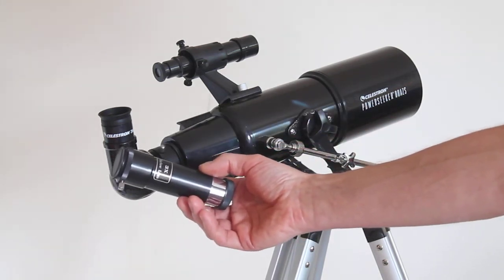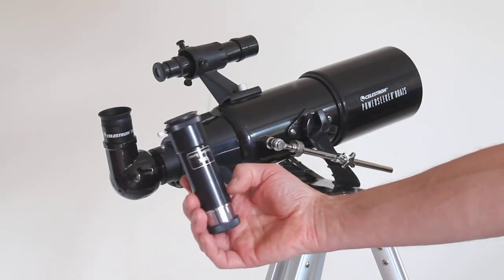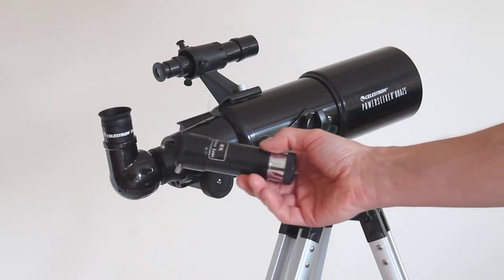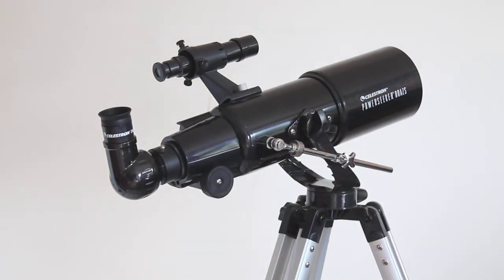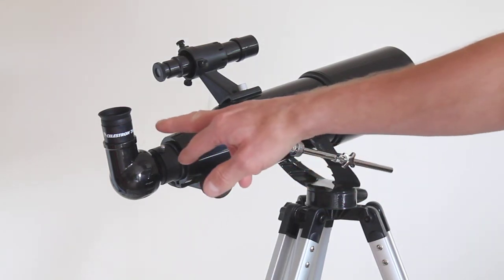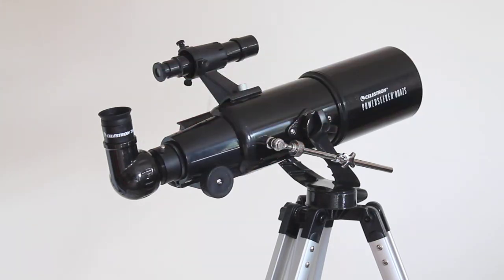It comes, I say sadly, with this 3x Barlow which is of no use whatsoever with the 4mm because it will give 300x magnification. That's way too much. But it can give 60x magnification with the 20mm eyepiece.